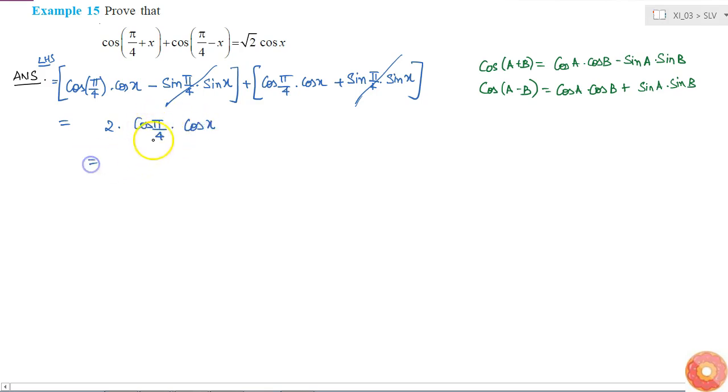What is cos pi by 4? 1 by root 2. So it is 2 into 1 by root 2 into cos x.